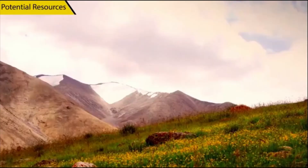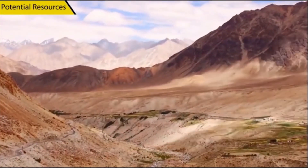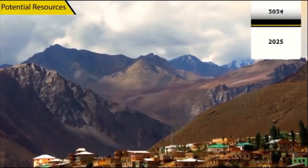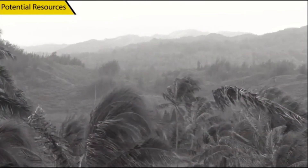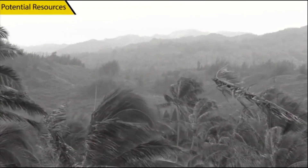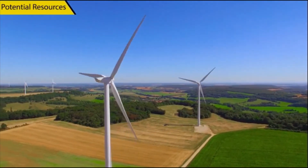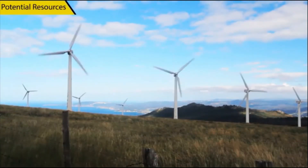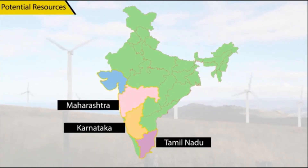In some cases, the level of technology available at present may not be advanced enough to easily use these resources. However, at a later stage, potential resources may be converted into actual resources. For example, 200 years ago, high-speed winds were a potential resource. Today, we have wind farms which generate energy with the help of windmills. India is probably the fourth biggest wind power generator in the world. Wind farms are majorly located in the states of Tamil Nadu, Maharashtra, Karnataka and Gujarat.